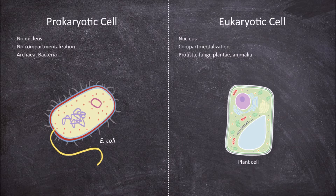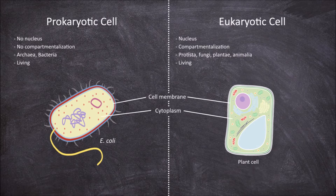Both prokaryotes and eukaryotes are considered living and as such both groups carry out all the essential functions of life. Prokaryotic and eukaryotic cells both possess a cell membrane, and within the cell, the cytoplasm, ribosomes, and DNA.